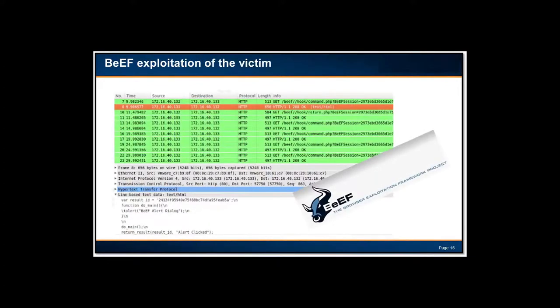I also want to show very quickly how it looks when someone is exploited with BeEF — the Browser Exploitation Framework. The HTTP 1.1 200 response really means that a session is successful and the user is being hooked by the browser exploitation framework. This runs on the web server side, and when the user connects to a certain site, their browser is exploited through a vulnerability — could be an iframe vulnerability or a browser vulnerability. Here we can see what really happens at the hypertext transfer protocol layer and how that exploitation looks.